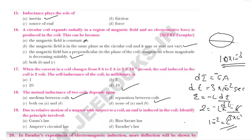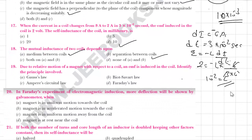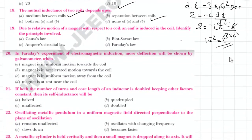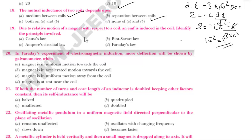Due to relative motion of a magnet with respect to a coil, an EMF is induced in the coil. Identify the principle involved. The principle behind it is Faraday's law.